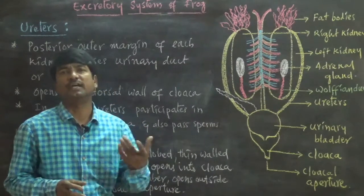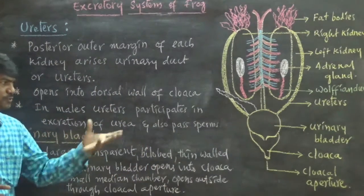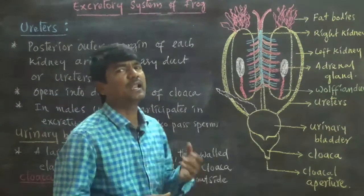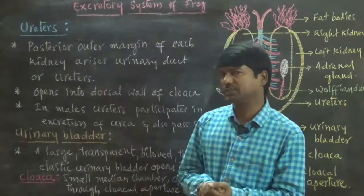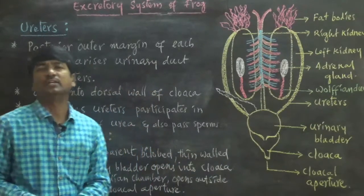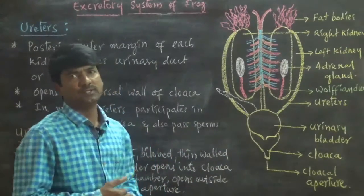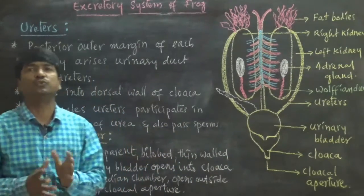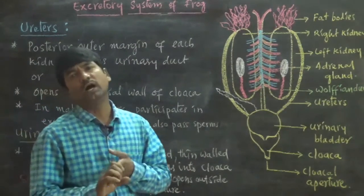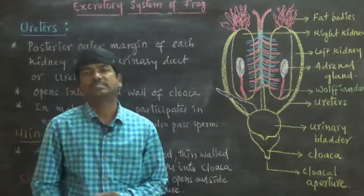The ureters open into the urinary bladder. The urinary bladder is a large, transparent, bilobed, thin-walled elastic chamber-like structure. From there, contents enter the cloaca, which finally opens outside through the cloacal aperture. The structures involved are: one pair of kidneys, one pair of ureters, urinary bladder, cloaca, and cloacal aperture.